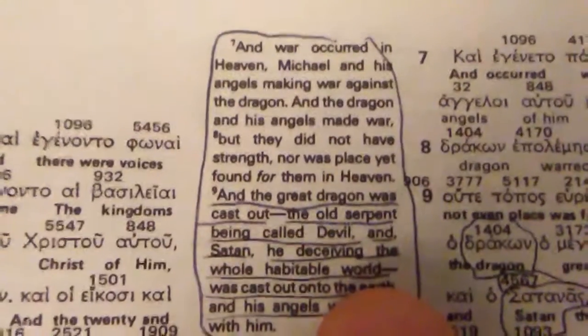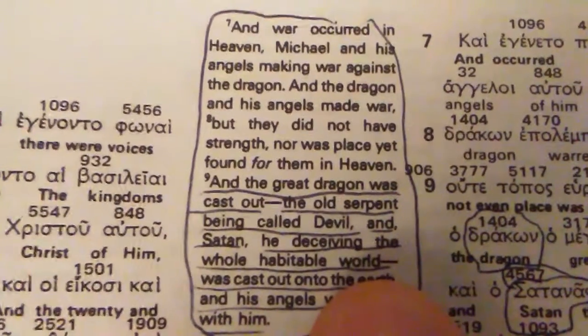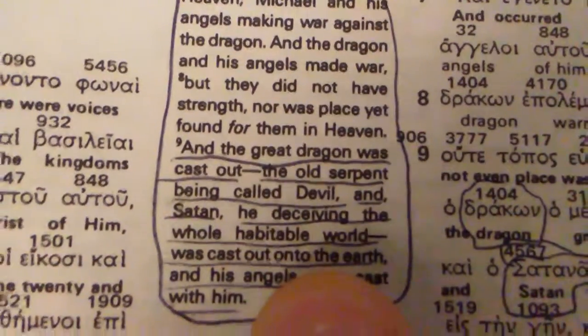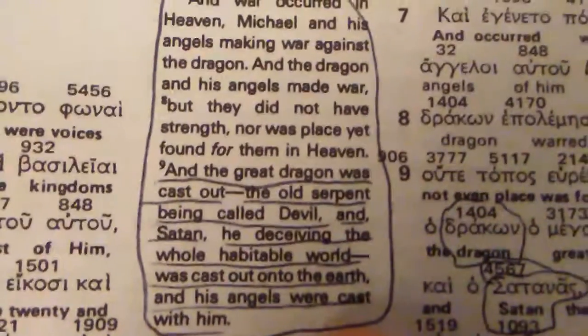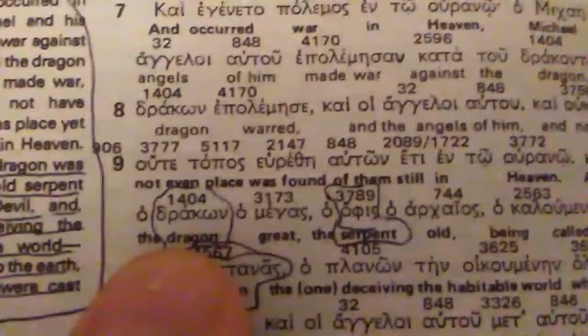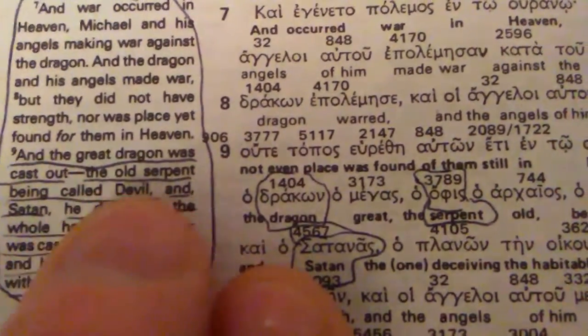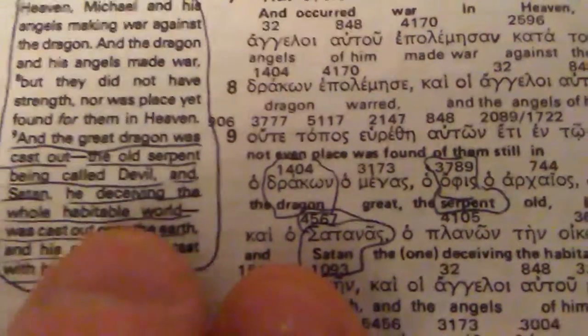Now we're going to go to Revelation chapter 12, verse 9. It says, 'And the great dragon was cast out, the old serpent being called devil and Satan, he deceiving the whole habitable world, was cast out onto the earth, and his angels were cast with him.' Right here it explains that they are all one thing: the dragon, the old serpent, the devil, and Satan — those are all one thing.